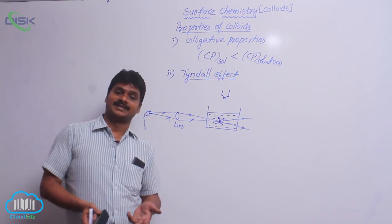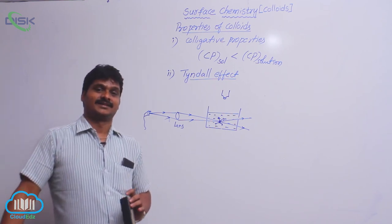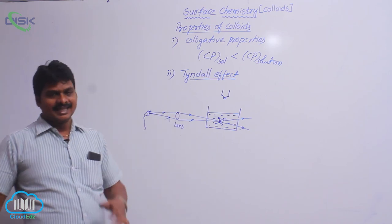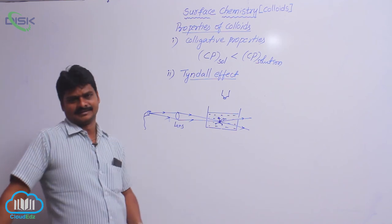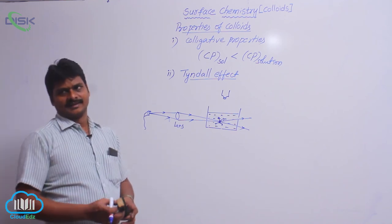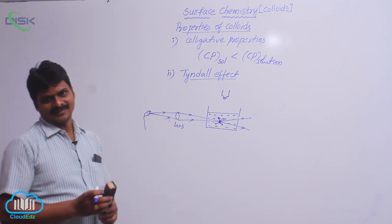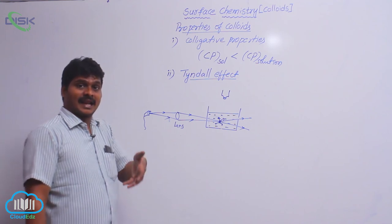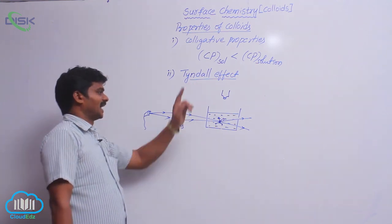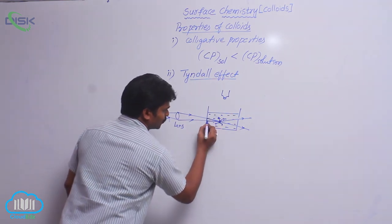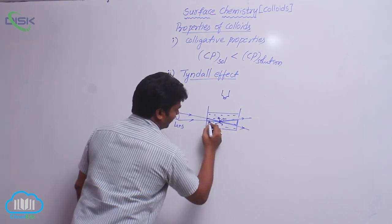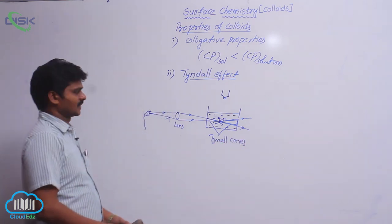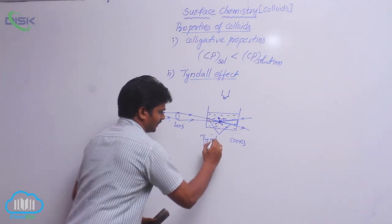We can also observe the Tyndall effect in a cinema hall. In a cinema hall, there will be dust and smoke particles inside the hall. During the projection of a picture, these smoke and dust particles scatter the light, and that is why the path of the light beam is illuminated. This type of illumination of the light path by colloidal particles is called the Tyndall effect. The two illuminated beams seen are called Tyndall cones.